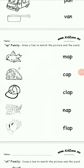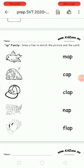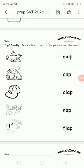App family, draw a line to match the picture and the word. First picture is flap — f, l, a, p — flap. Then nap, cap, map, clap.